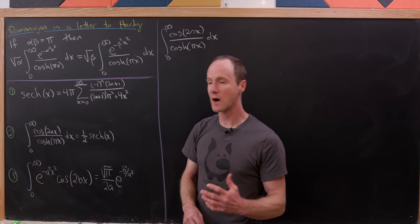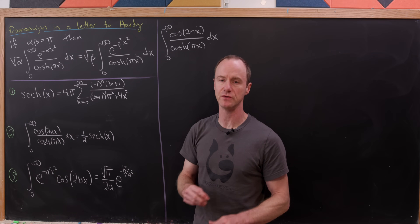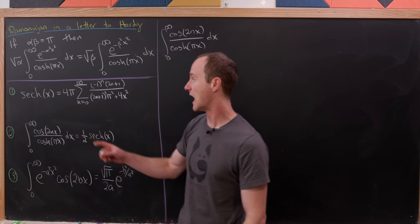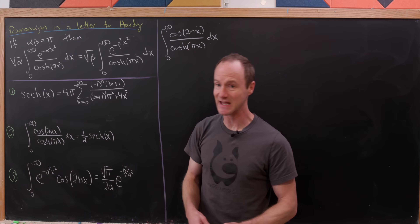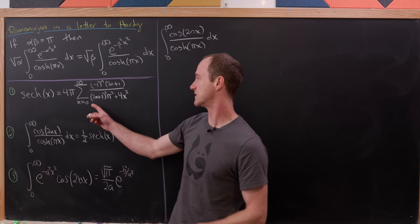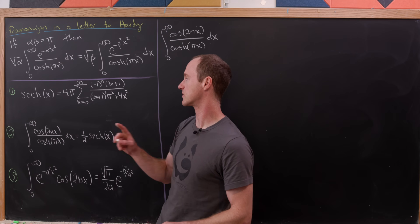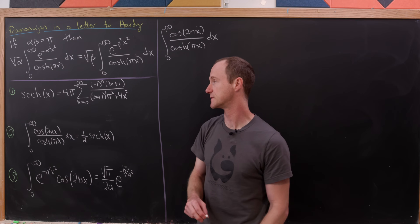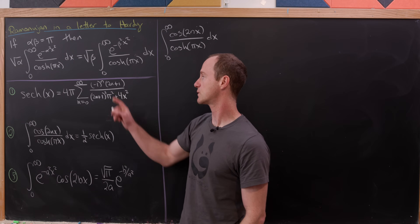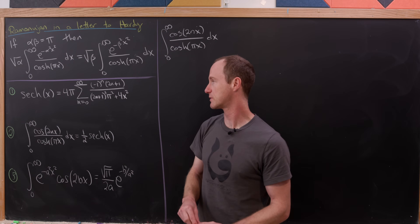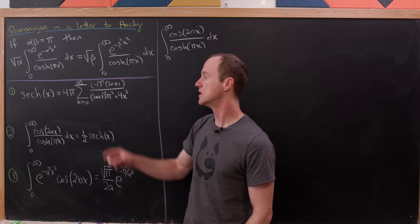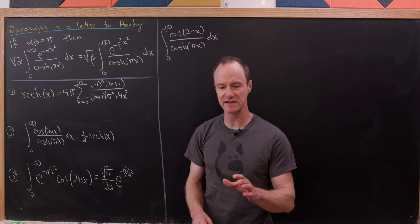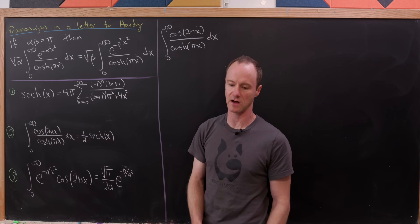We're going to use a couple of tools, one of which we've used on the channel before: the hyperbolic secant expressed as a nice series. It's equal to four pi times the sum as n goes from zero to infinity of (-1)^n times (2n+1), all over (2n+1)^2 pi^2 plus 4x^2. We derived that on the channel before.